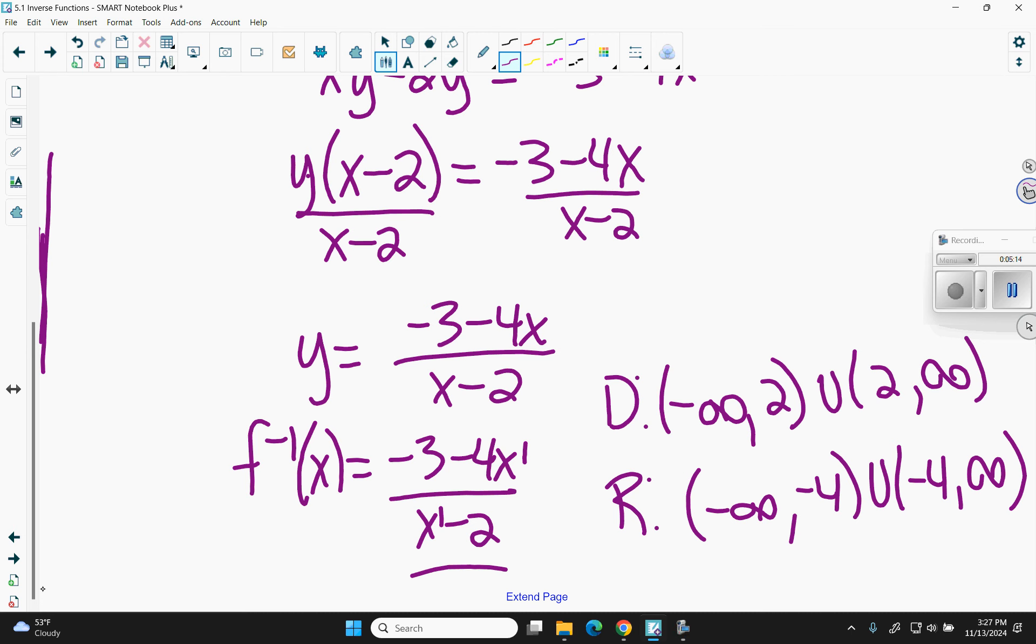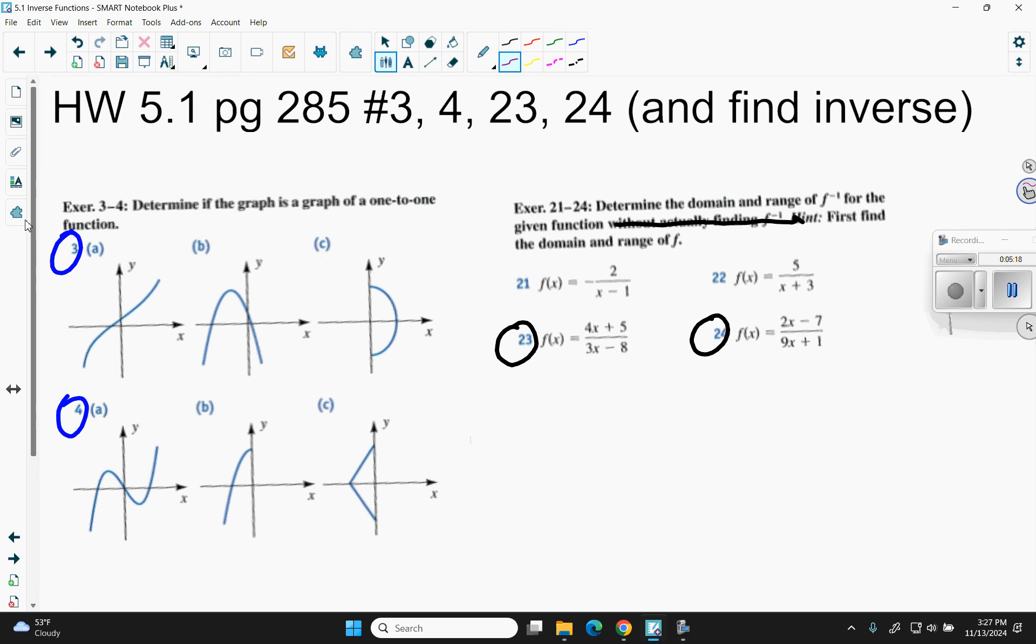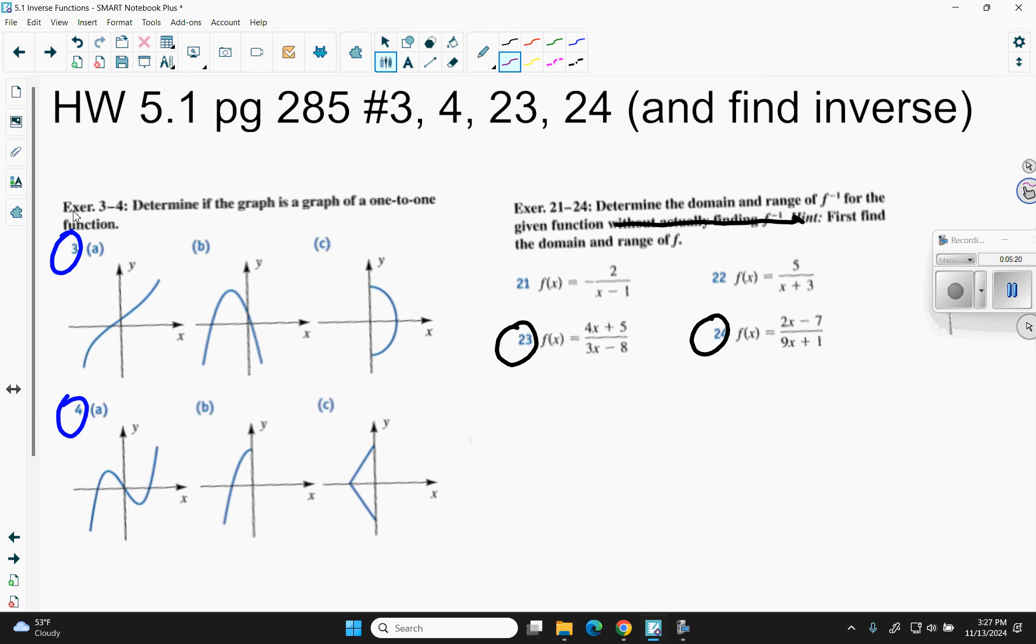So what you're going to do for homework is these problems. And so if you look at 3 and 4, there are three questions for each one. Is it a function? Is it a one-to-one function? Does it pass the vertical line test? Does it also pass the horizontal line test? So they're really just yes and no questions.